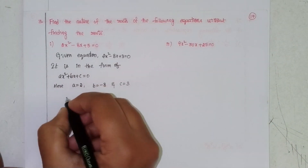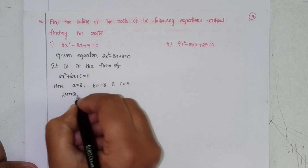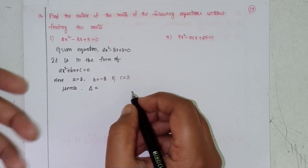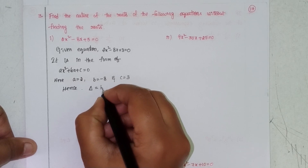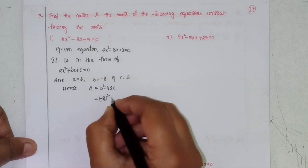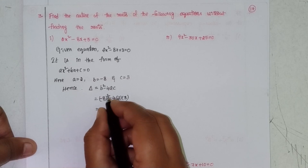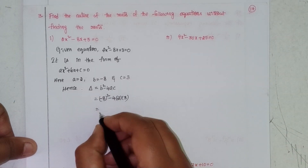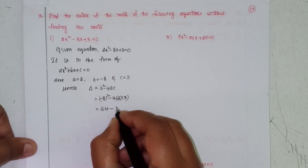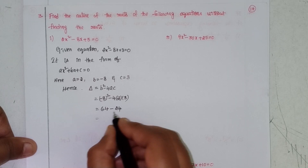So, delta equals b² - 4ac. Here b means -8, so (-8)² = 64, minus 4 × 2 × 3 = 24. So delta = 64 - 24 = 40.